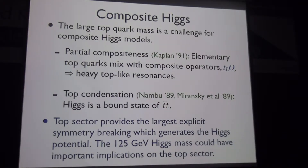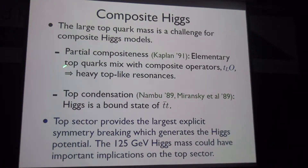Another challenge in composite Higgs models is the top quark Yukawa coupling. Because the Higgs is non-elementary, writing down the Yukawa coupling results in a higher-dimensional operator, and the coupling is in general too small for the top quark. Some mechanism is needed to enhance it: the top quark must at least partially participate in the strong dynamics, either directly or through large mixing with the strong sector.